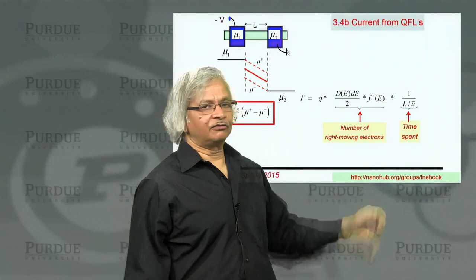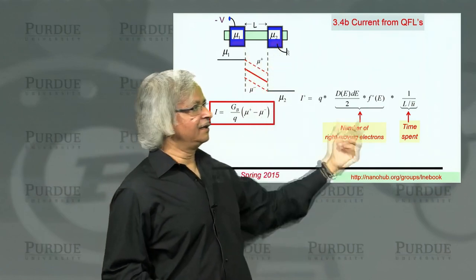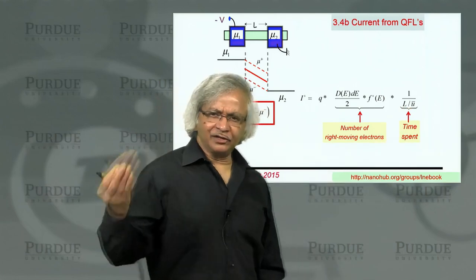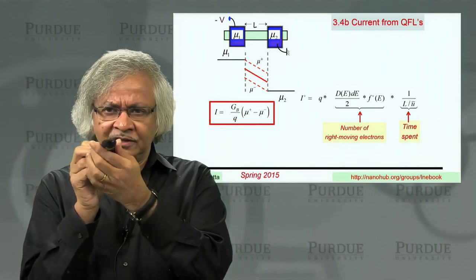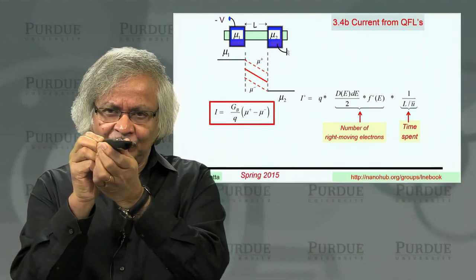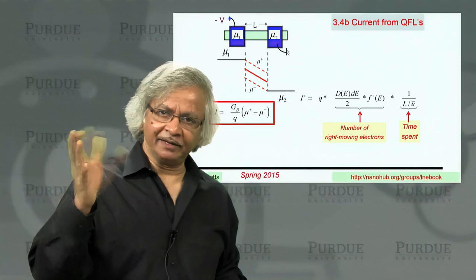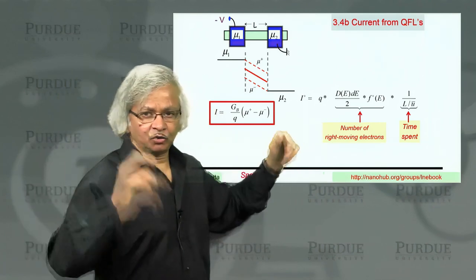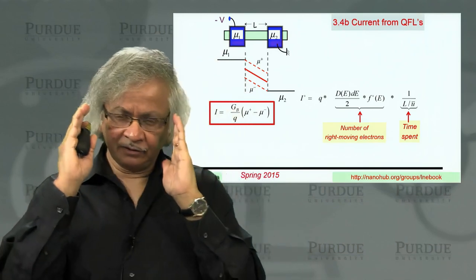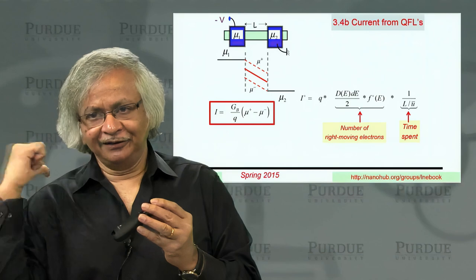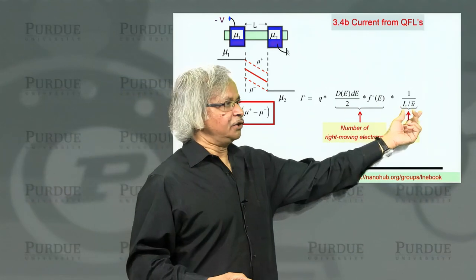Then I multiply by the amount of time that each electron spends on the highway — in going from one end to the other. That time is L divided by the average velocity of right-moving electrons. Why is there an average? That's what we discussed in unit one: there are some electrons going straight, some going at an angle, and you need an average, which in the two-dimensional case amounts to 2 over pi — basically a number close to 1. This is just the average of all the electrons headed to the right, not those going to the left which have a negative component of velocity.